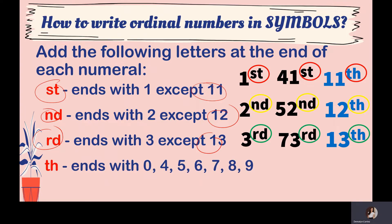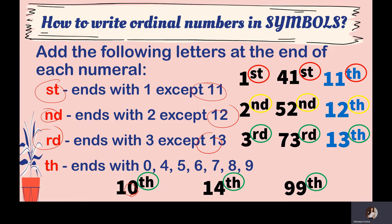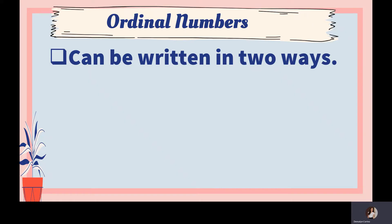For TH, any number ending with 0, 4, 5, 6, 7, 8, or 9 takes the suffix TH — for example, 10th, 14th, 99th, 45th, 56th, 67th, and 78th. There are only three exceptions: 11, 12, and 13. Remember the rules and the letters we need to add at the end of a number to make it an ordinal number.